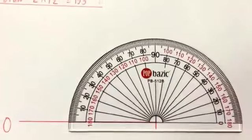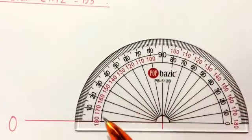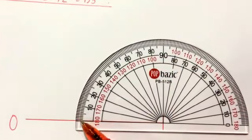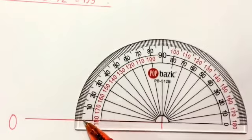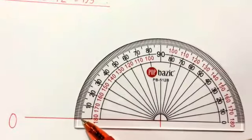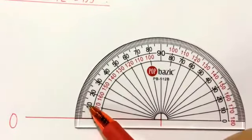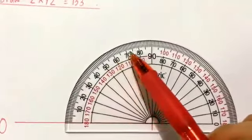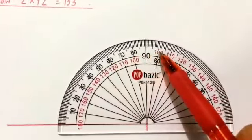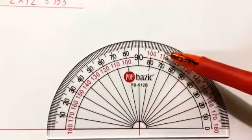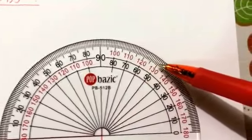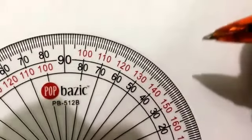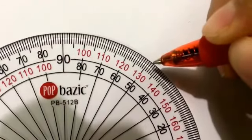Okay, now 133. I will start counting from here because this is zero, and since this is zero I start from the outer scale. Zero, then 20, 30, 40, 50, 60, 70, 80, 90, 100, 110, 120, 130, 131, 132, 133.